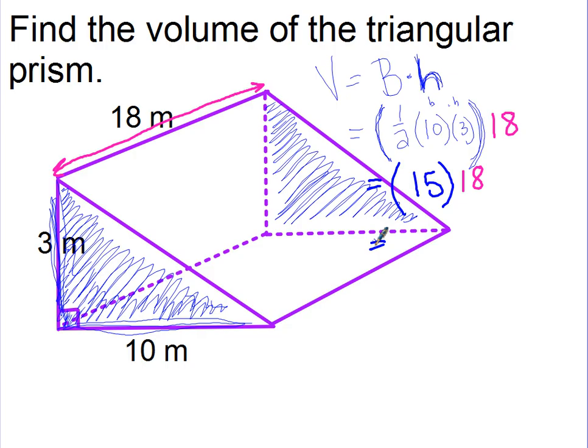So this triangular prism has a 270 cubic meter volume to it.